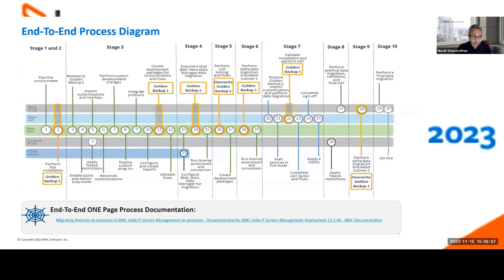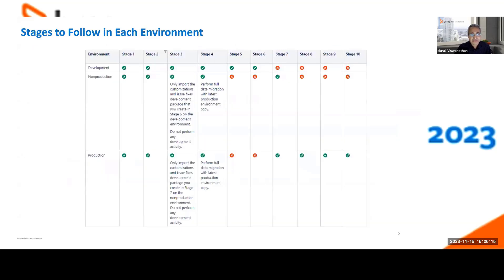This diagram shows the stages and main activities throughout the entire process. This table helps you understand what stages happen in which environments. For example, in the development environment you perform stages one and two — primarily preparing, planning, installation, and deployment — which you'll also perform in all other environments. Stage three covers customization, integration, and development work, performed only in the development environment. You can leverage the deployment console to export and create deployment packages to deploy in non-prod environments — QA, SIT, pre-prod — and similarly for production.